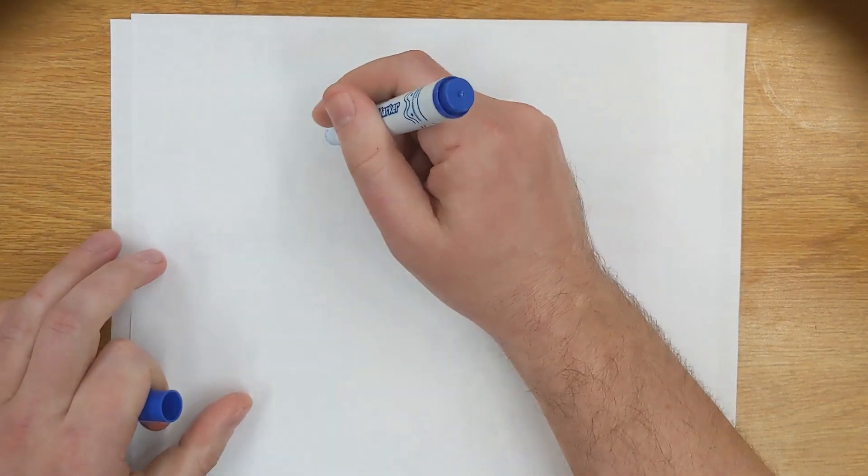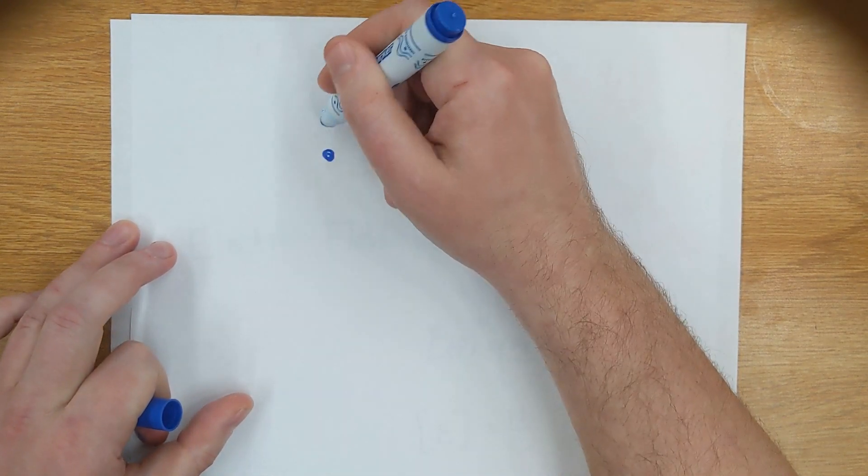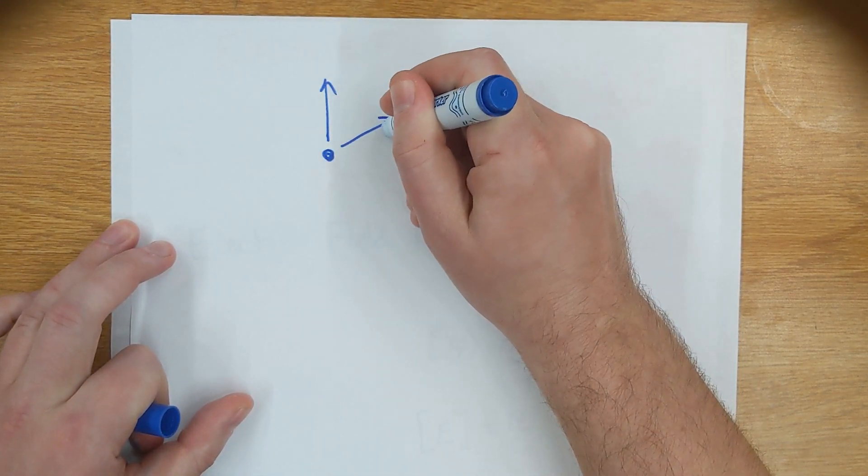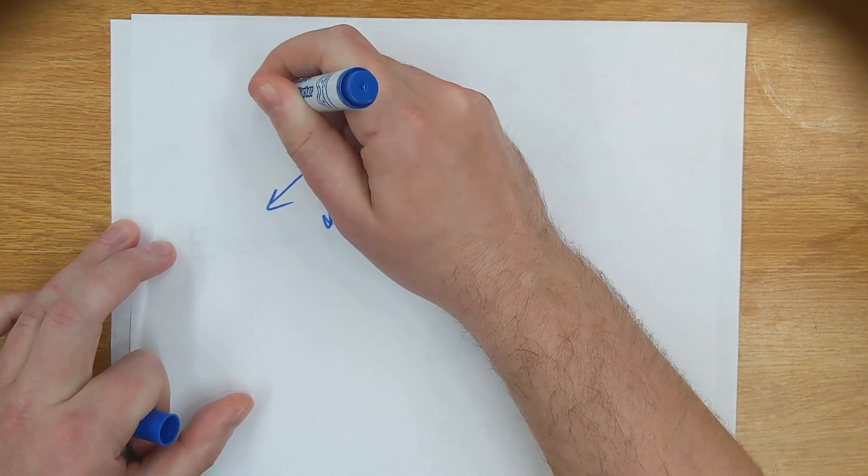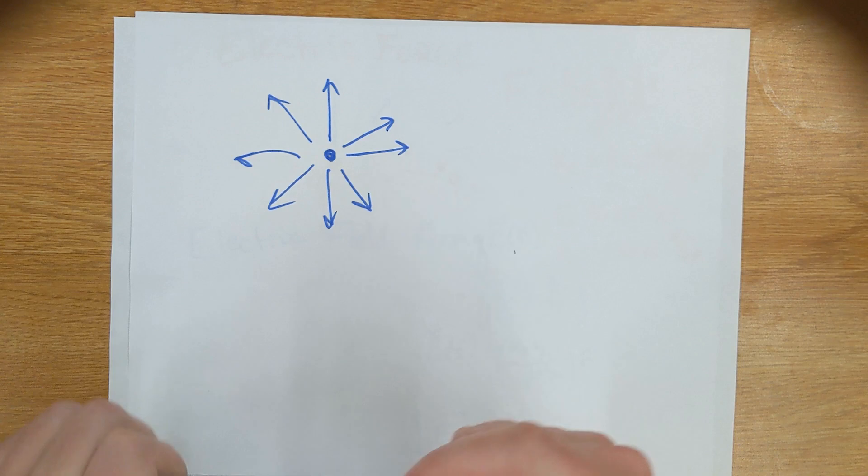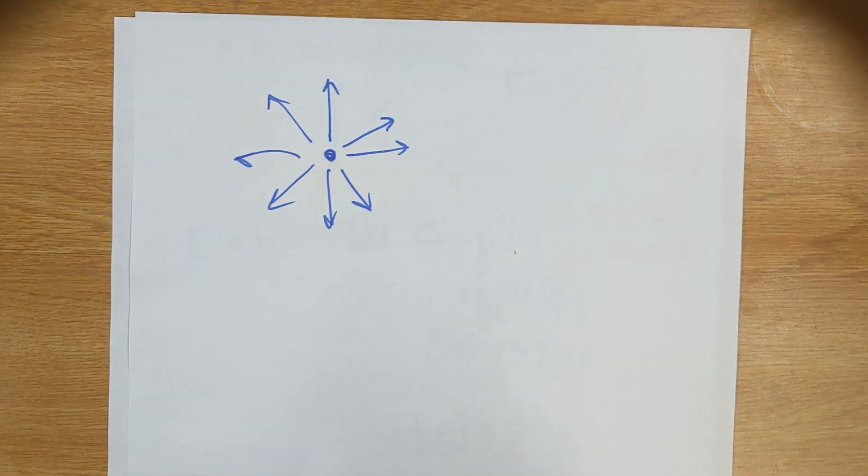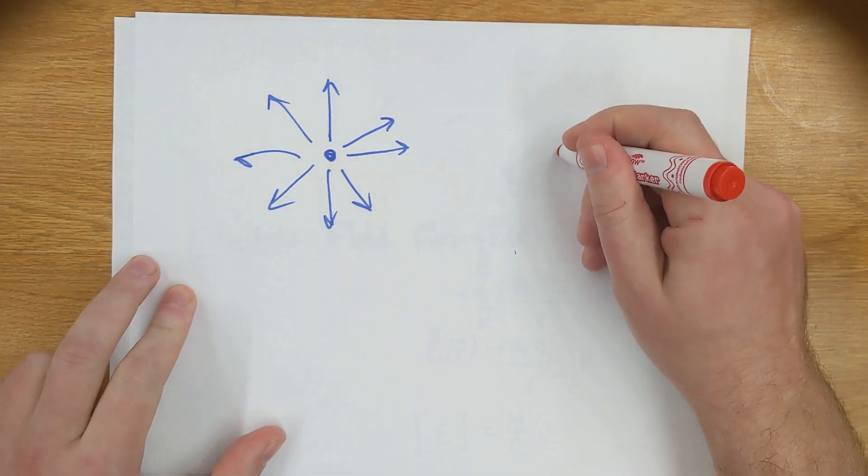So if we take a look at those two examples, if I had just a positive charge, then I would have field pointing away from that charge. And if I had just a negative charge, I would have field pointing towards that charge.